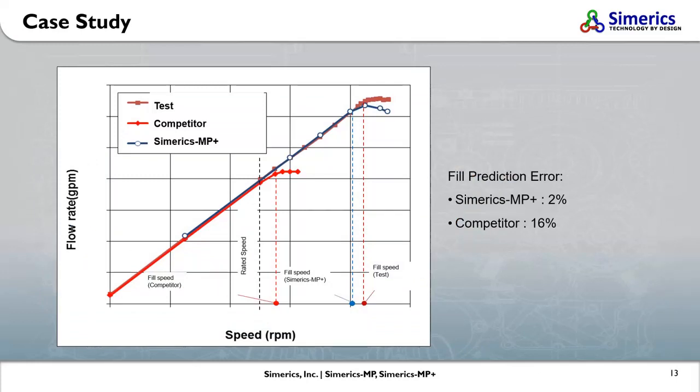Now let's look at a self-priming analysis, in which a pump's speed is increased until the flow rate curve starts to flatten due to cavitation. The brown red line denotes the Sumerix MP Plus results, while the smaller red line denotes the results from another CFD tool. Sumerix MP Plus prediction had an error of 2%, while the other CFD tool generated an error of 16%.